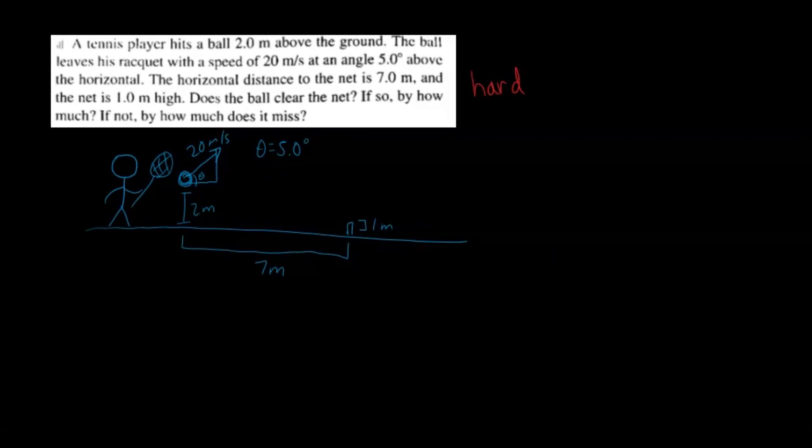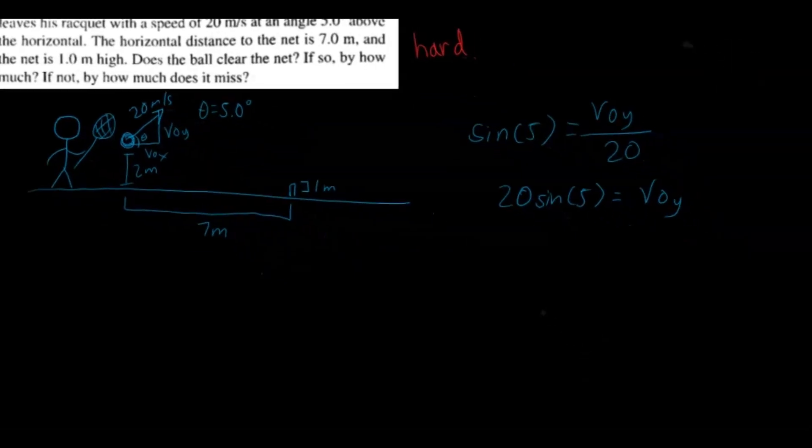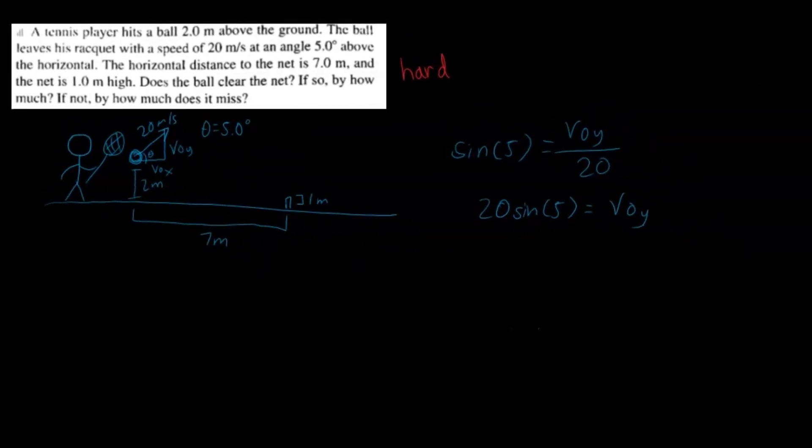All right, now we have the situation drawn. Let's actually get to solving it. So the first thing I want to do is break that velocity, right? Break that initial velocity into its components. So initial velocity for y, using trig, we can just find that. So using trig, you know, the sine of 5 would be opposite over hypotenuse. So the opposite here would be the initial velocity for y and the initial velocity for x. So initial velocity for y above and then 20 below. And so we just multiply 20. We find that 20 times sine 5 equals the initial velocity in the y direction.